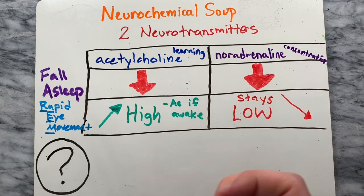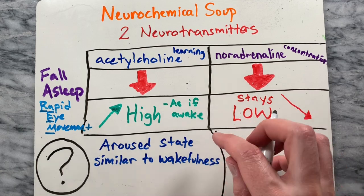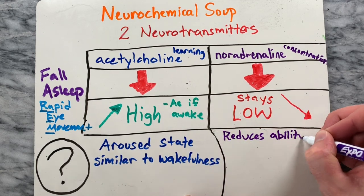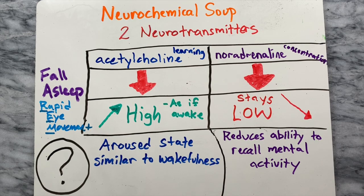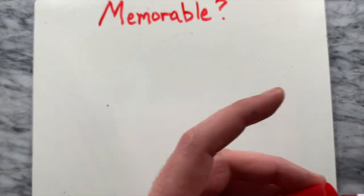Although still a mystery, some think the boost in acetylcholine puts the brain in an aroused state similar to wakefulness, while low noradrenaline reduces our ability to recall our mental activity during this time. This explains why our brains are actively dreaming but not retaining the memory.